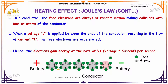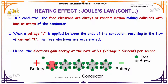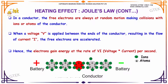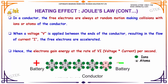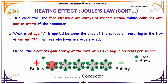To talk about the heating effect in a conductor: the free electrons are always in random motion, making collisions with the ions or atoms in the conductor. When a voltage V is applied between the ends of the conductor, it results in the flow of current. The free electrons are getting accelerated, and hence the electrons gain energy at the rate of voltage into current per second.